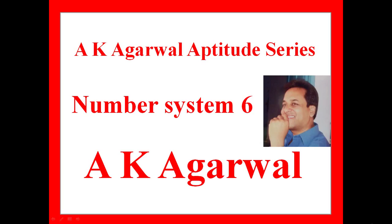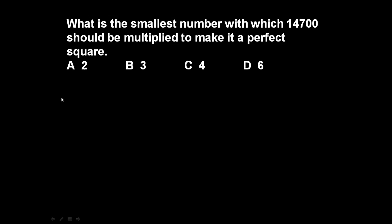Hello friends and welcome to AK Agarwal Aptitude Series. In this session we are going to learn a technique for solving a problem on number system. Here the given problem is: what is the smallest number with which 14700 should be multiplied to make it a perfect square?